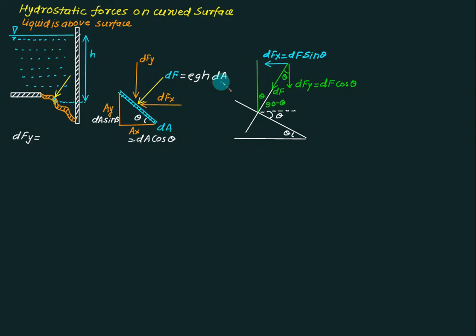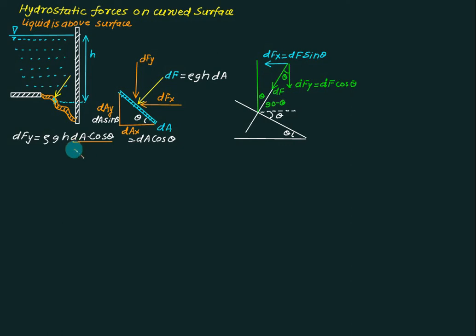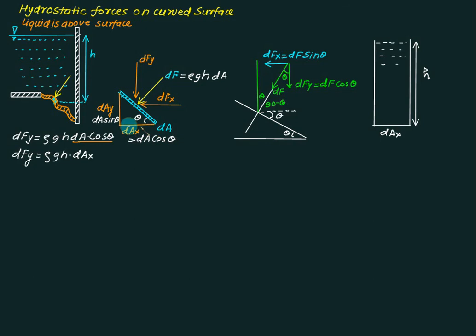We can write dFy = ρ × g × h × dA × cosθ. Since dA·cosθ equals dAx, we have dFy = ρg·h·dAx. Here, dAx multiplied by h represents the volume of liquid above dAx, so h·dAx = dV. The weight of this water acts vertically downward.